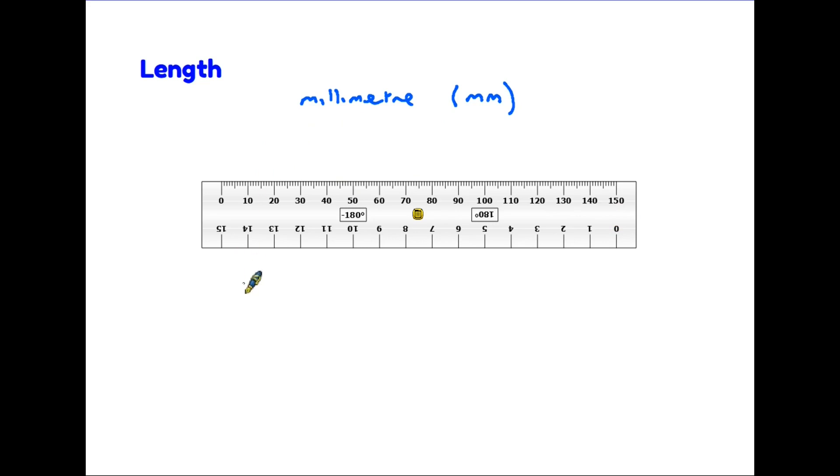However, we also know that 10 millimetres is equal to one centimetre, which we write as cm. So in fact from the zero here, each of the larger lines that we see on the sides of the ruler is one centimetre.